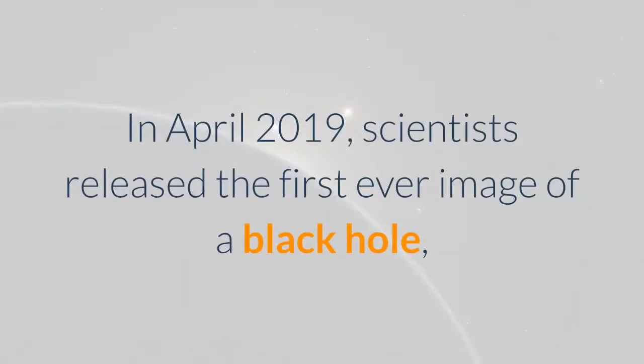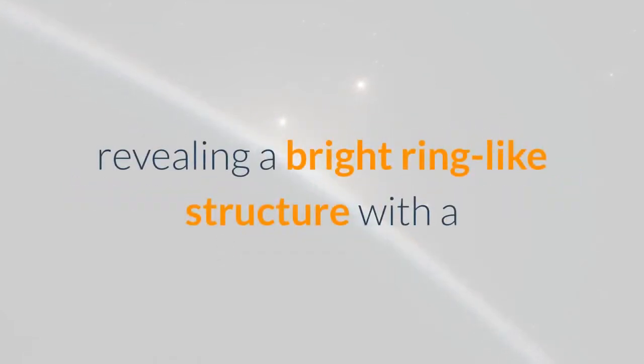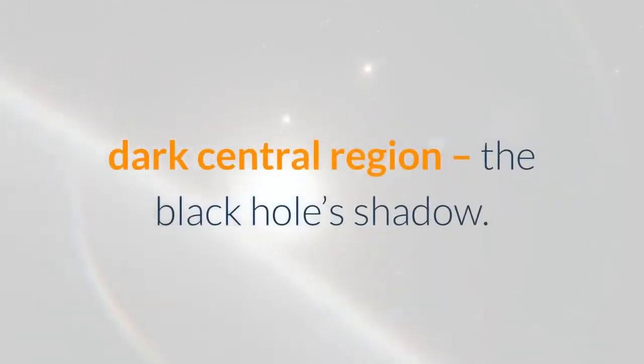In April 2019, scientists released the first ever image of a black hole, revealing a bright ring-like structure with a dark central region, the black hole's shadow.